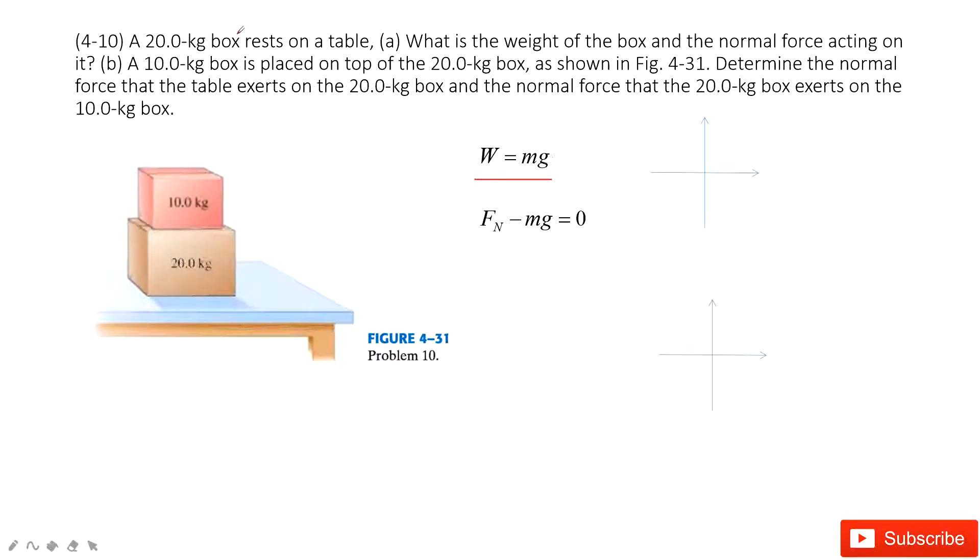Super easy, right? Mass is given, g is 9.8. The second one asks for the normal force. We look at the vertical direction. The normal force equals gravity to keep it stationary, so the normal force equals mg.